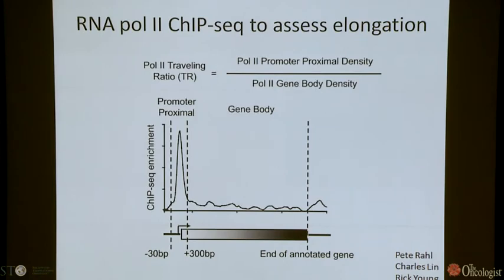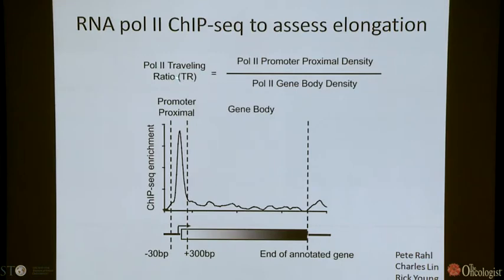To determine whether this was indeed the mechanism, we collaborated with Rick Young's lab at the Whitehead, who has expertise in elongation, using a ChIP-seq assay measuring RNA Pol II binding across chromatin. They calculate the amount of Pol II bound in the promoter region versus the amount bound in the gene body — a ratio called the traveling ratio. Genes with lots of Pol II in the promoter but almost none in the body have a very high traveling ratio. As Pol II leaves the promoter and moves into the body, this ratio goes down. The traveling ratio acts as a readout of transcriptional elongation genome-wide.